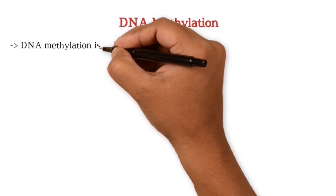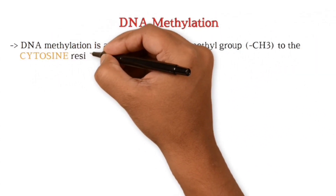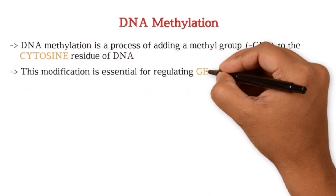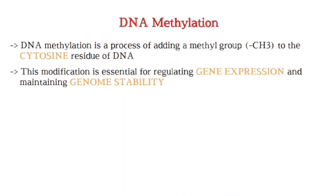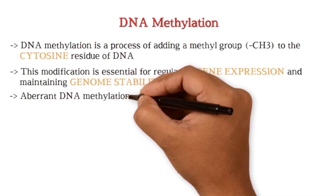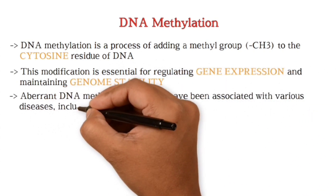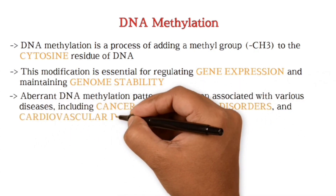Now we'll see about DNA methylation. It is a process of adding a methyl group to the cytosine residue of DNA. It is essential for regulation of gene expression and maintenance of genome stability. Aberrant DNA methylation patterns have been associated with various diseases like cancer, neurological disorders, and cardiovascular disease.